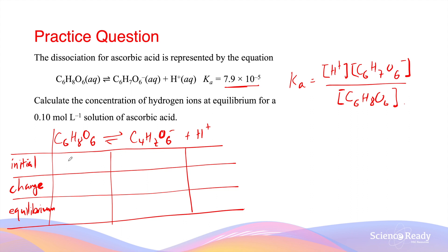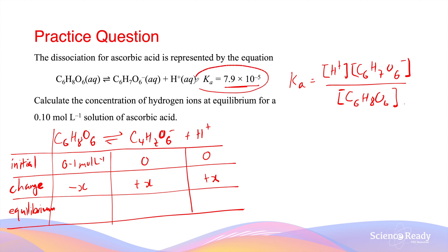The initial concentration of ascorbic acid is 0.1 mol per liter, while the concentrations of the ions are both 0 at the very beginning. As the ascorbic acid dissociates, a small amount of the ascorbic acid will become the ions. The concentration of ascorbic acid decreases by x, while the ions will increase by the same amount, because they're in a one-to-one stoichiometric ratio. We know only a small amount dissociates because the equilibrium constant is a very small number.